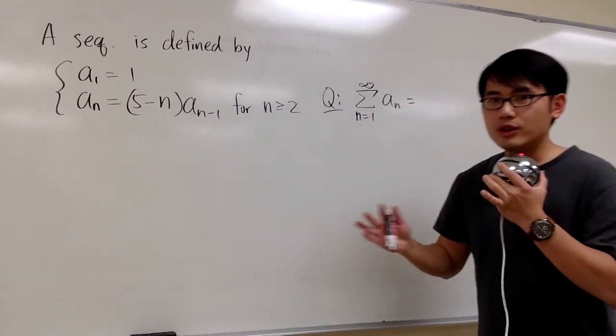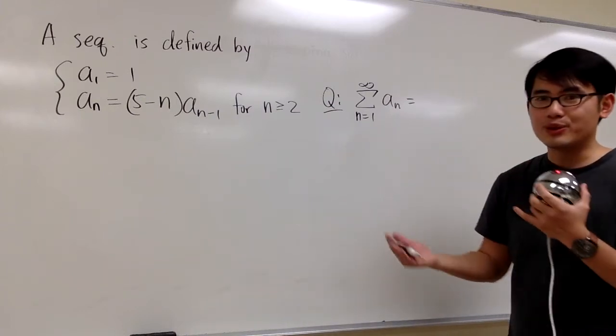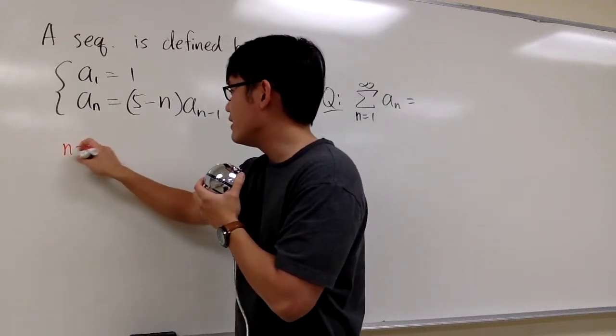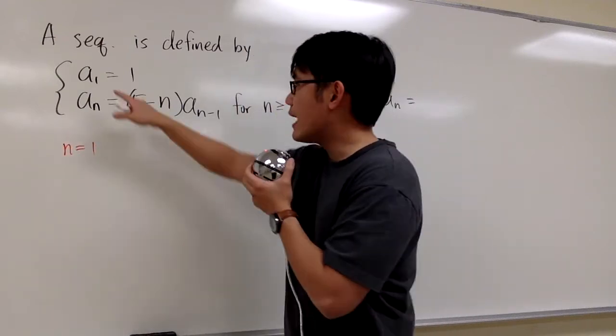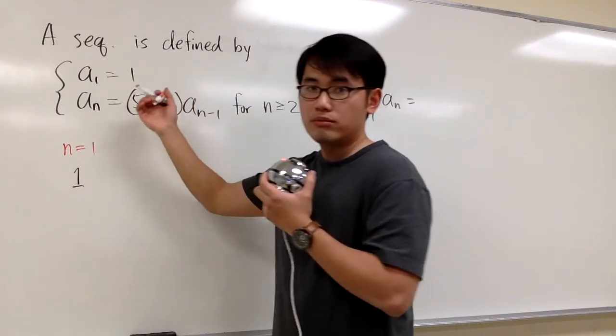So, why don't we just write down the first few terms to see what happens, and that's how we can feel better about this question. Let's go ahead and do that. So for the first term, we have n is equal to 1, and we know that a₁ was 1, so we can just put down 1, because it says so. The first term is 1.